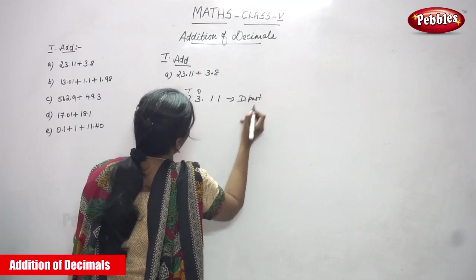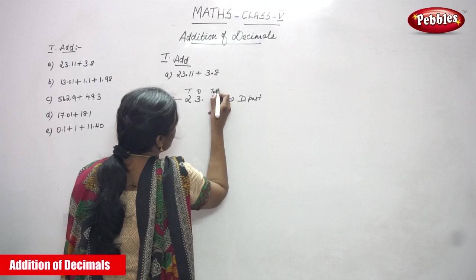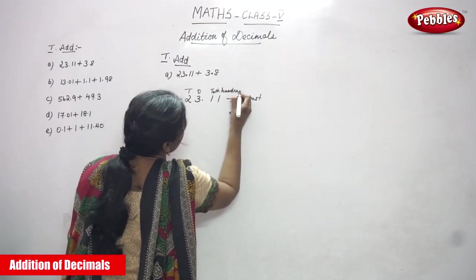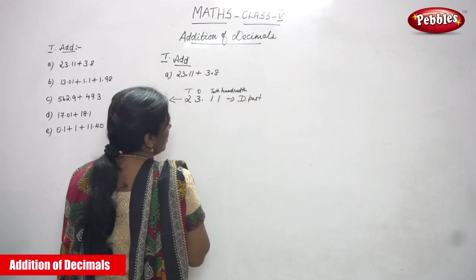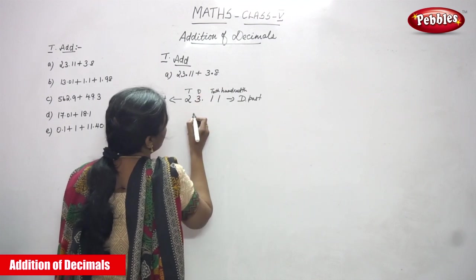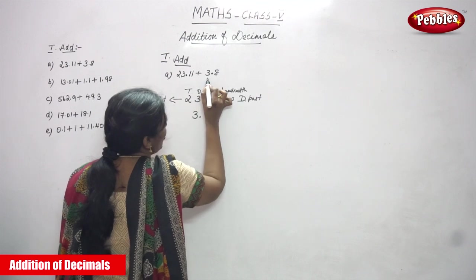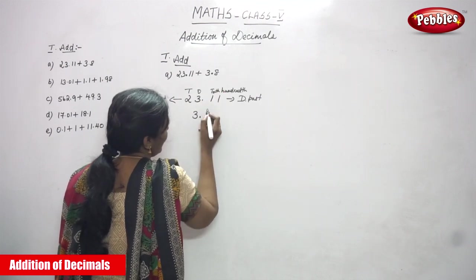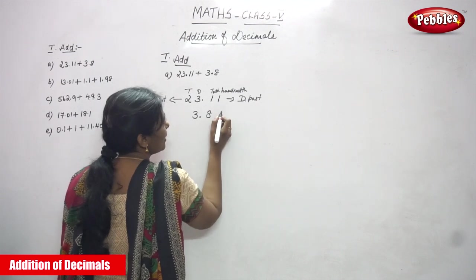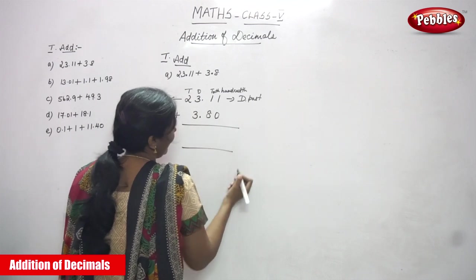This is the tenth place — T-E-N-T-H — and this is the hundredth place — H-U-N-D-R-E-D-T-H. After that, you have to write the numbers according to their place value. So the 1 is in the ones place. After that, 8 must come in the tenths place. So if you don't have a number in the hundredths place, you must put 0.